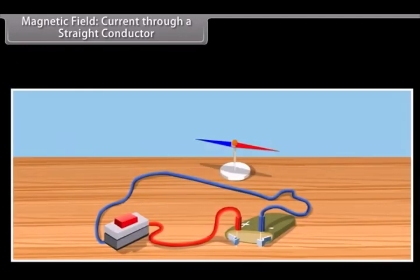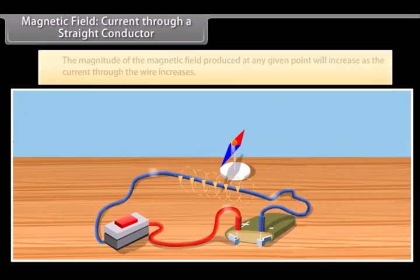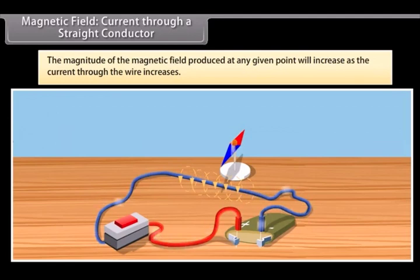Magnetic field: Current-carrying conductor. As you have seen earlier, let us see what happens when we change the current that is passing through the wire. The effect on the compass also varies. So, if you increase the current, the deflection of the needle of compass will increase. From this we know that the magnitude of the magnetic field produced at any given point will increase as the current through the wire increases.